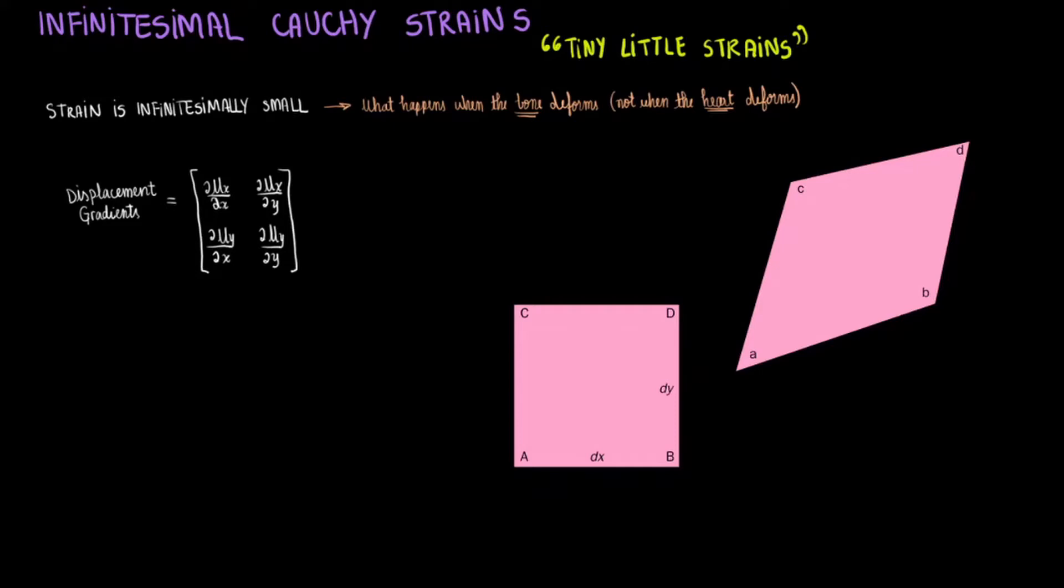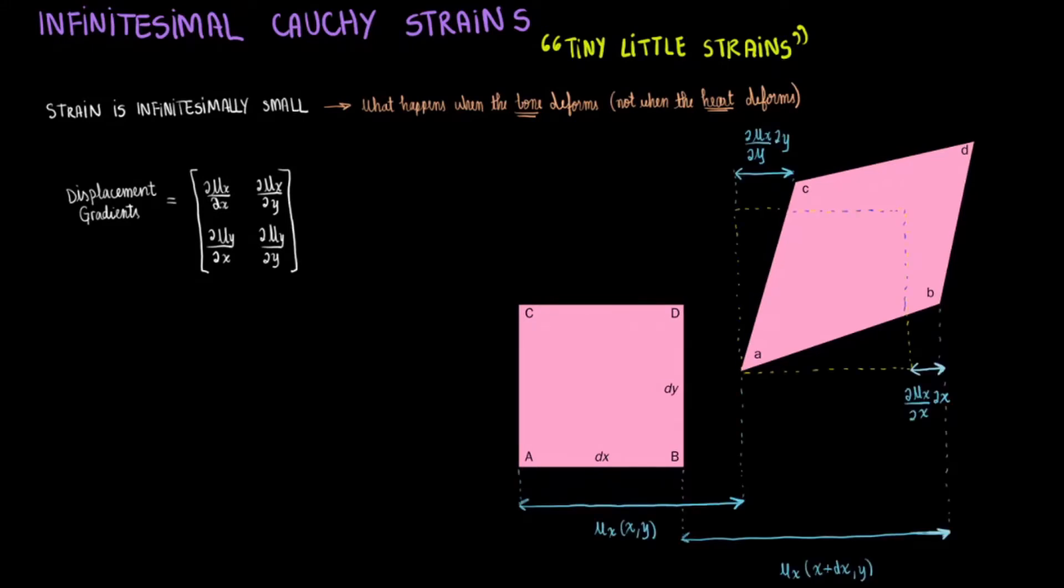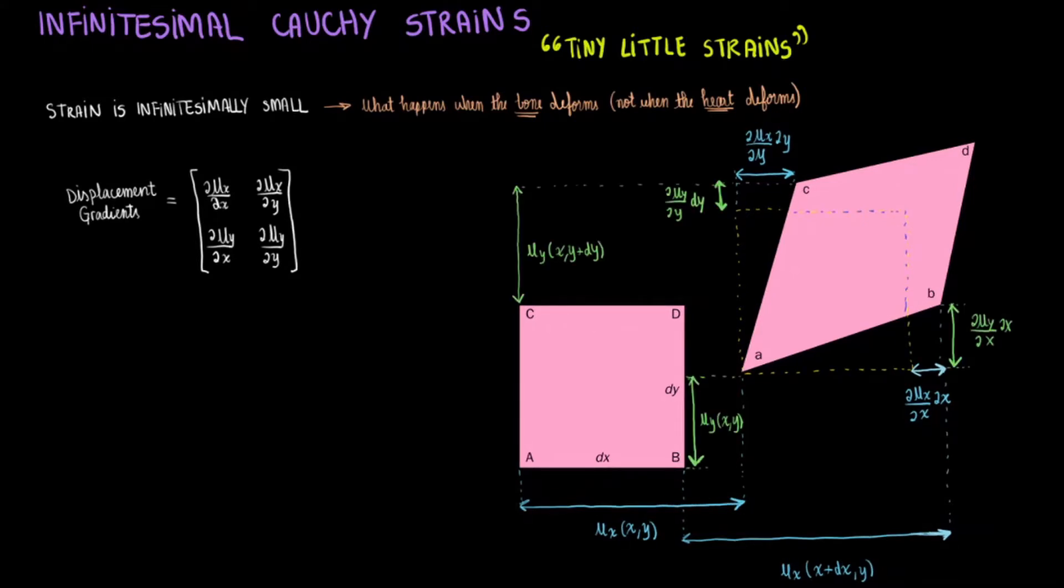When you are trying to predict how a shape would change by having a certain displacement gradient, it may help to visualize how this square changes with different component changes. Duy divided by the product of dy times dy, and duy divided by dx times dx, which are both basically duy, will bump the square up at different points. Similarly,